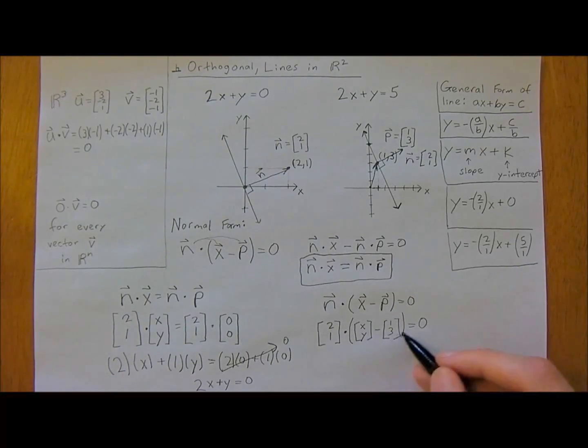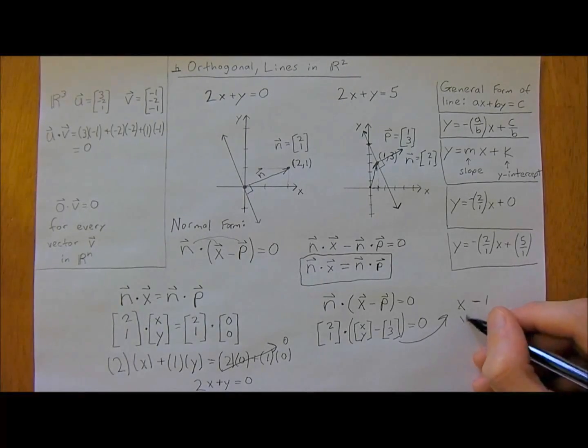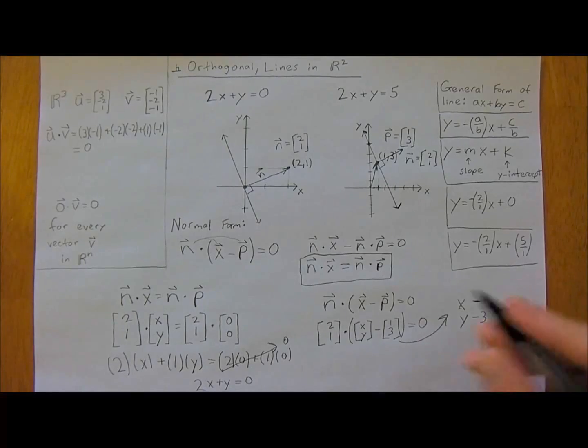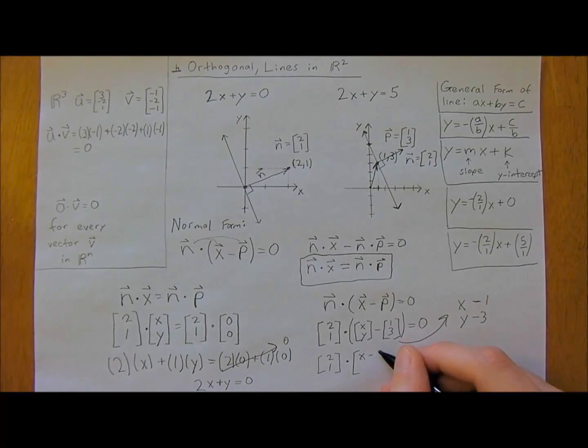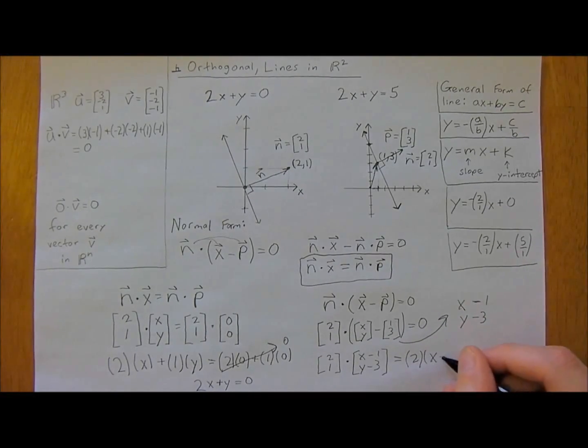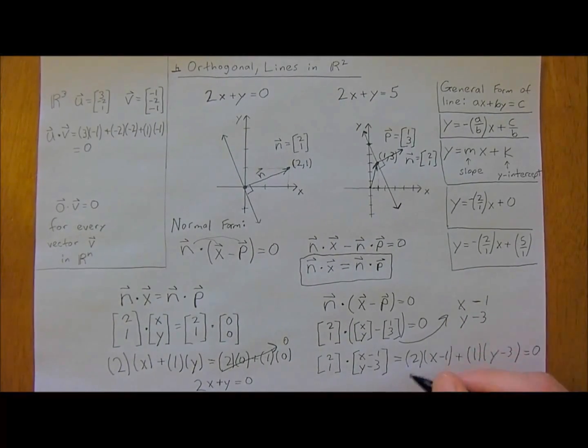Subtracting vectors in this area here, we're just going to get x minus 1, and we're going to get y minus 3. So we're going to have [2, 1] dot product with [x minus 1, y minus 3]. The dot product is just multiplying the x component, so 2 times (x minus 1), then you multiply the y component, so 1 times (y minus 3). Remember, it's all equal to zero. So we just get 2x minus 2 plus 1 times y minus 3, minus 3, equals zero.